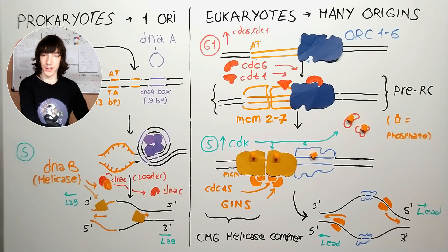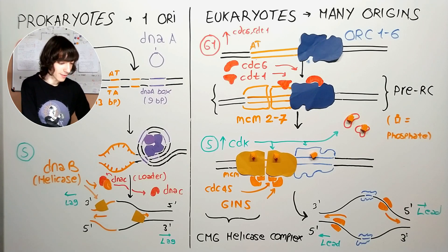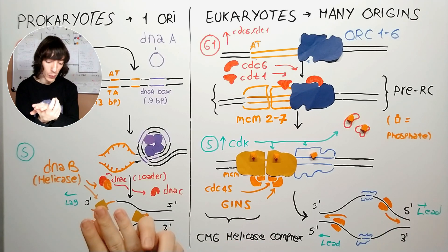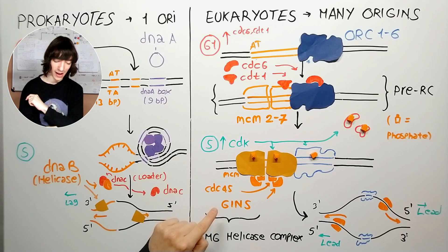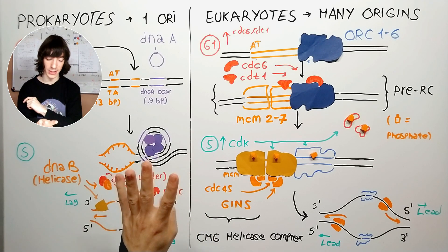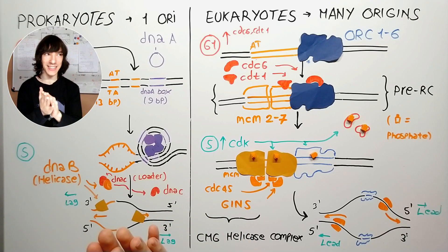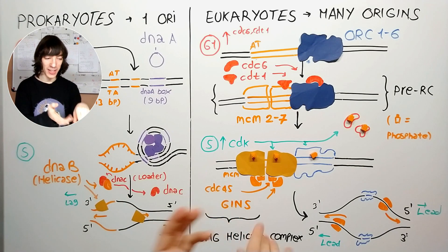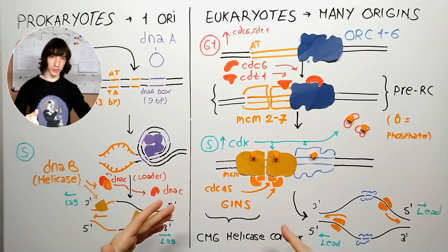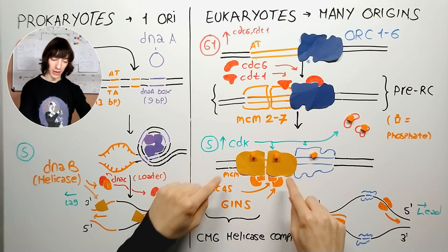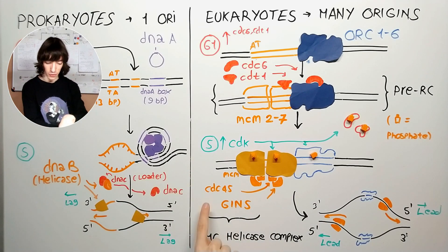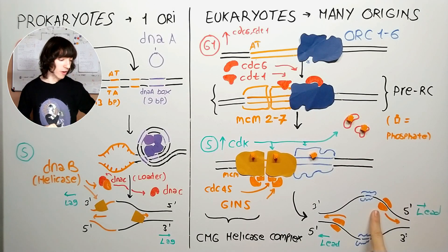The helicases cannot really do their job efficiently alone — they also need a few other proteins: CDC45 and GINS. GINS is actually a complex of four proteins, and each of those letters corresponds to the first letter of the number of the protein in Japanese. The complex of helicases — CDC45, MCM, and GINS — is called the CMG helicase complex: C for CDC45, M for MCM, G for GINS. As mentioned before, helicases in eukaryotes move along the leading strand.